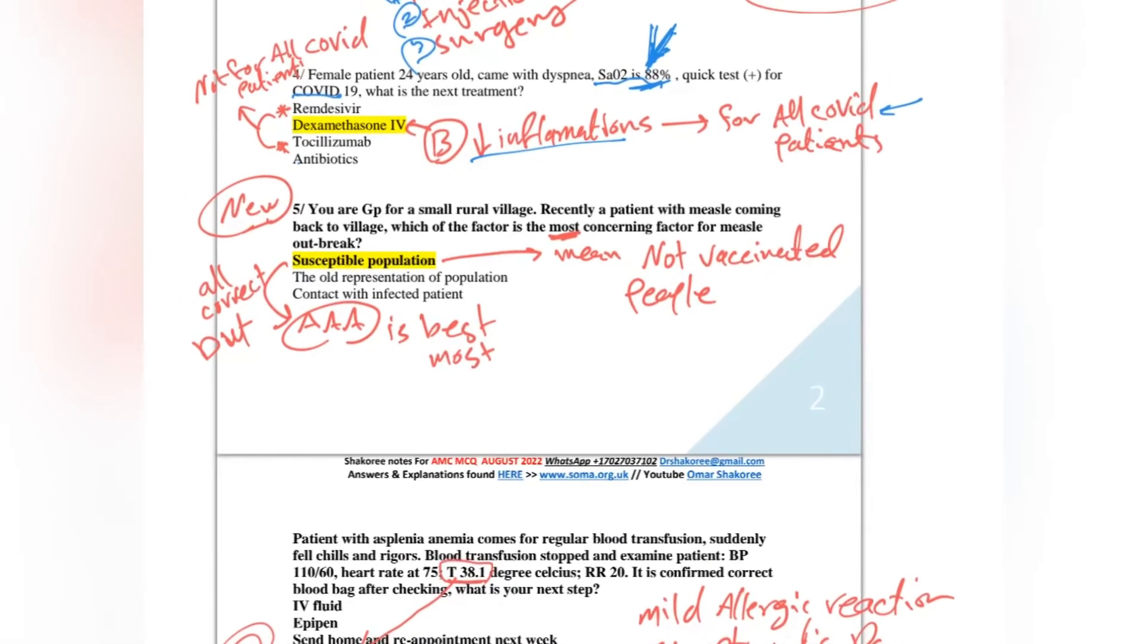This is a new question here. You are a GP for a small rural village. Recently a patient with measles came back to the village. Which factor is the most concerning? This question is asking you, you are a GP doctor sitting in a place, but there is a measles outbreak. What's the most important concerning factor for you as a doctor regarding measles outbreak?